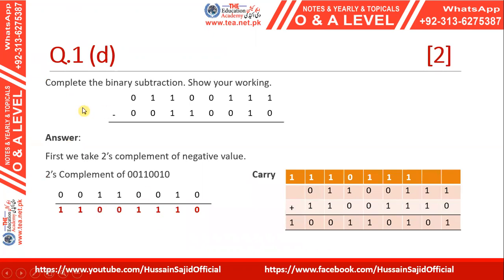Part d asks to complete the binary subtraction showing your working. We subtract the second number from the first. When subtracting two binary numbers, we first take the two's complement of the negative value — the second number. To find the two's complement: start from the right, find the first one, write all bits as they are up to and including that first one, then replace zeros with ones and ones with zeros moving left. This gives us a new positive number to add to the first number.